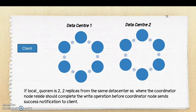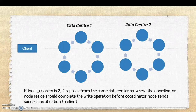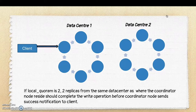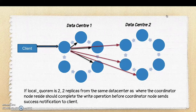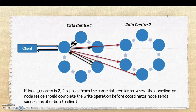Cassandra can span over multiple data centers. With Local Quorum set to 2, it means 2 replicas from the same data center as the coordinator node must complete the write operation before the coordinator sends success to the client. For example, if the client sends a write request to the coordinator in data center 1, the coordinator sends the write request simultaneously to all replicas in data center 1 and data center 2. But as soon as it gets at least 2 write-complete responses from replicas in data center 1, it sends success back to the client — it does not wait for data center 2 replicas to respond.